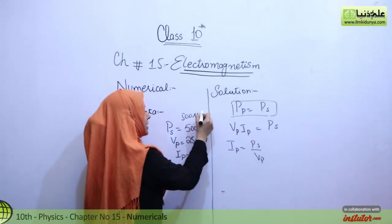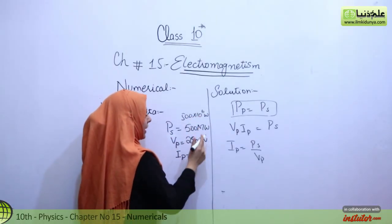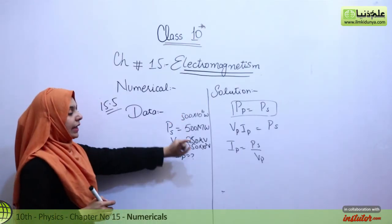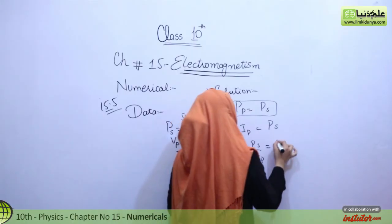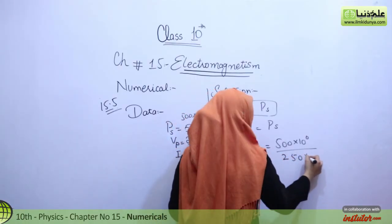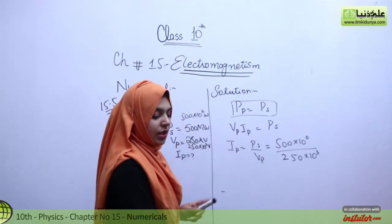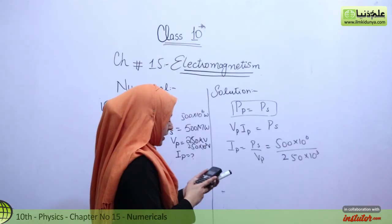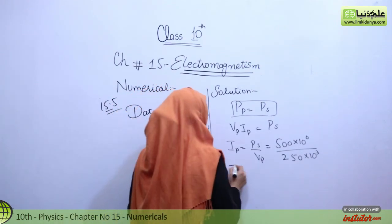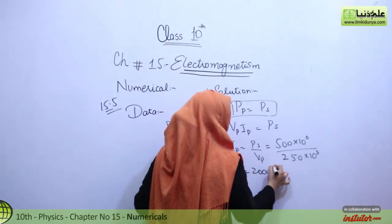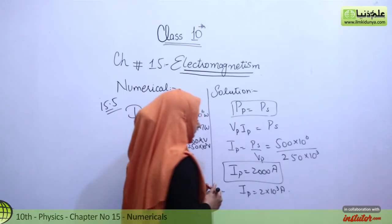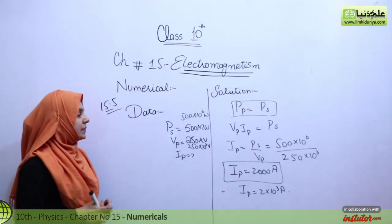The values are in mega and kilo units. Converting: mega means 10 to the power 6, kilo means 10 to the power 3. So PS equals 500 × 10^6, and VP equals 250 × 10^3. Calculating: 500 × 10^6 divided by 250 × 10^3 equals 2,000 ampere, which can also be written as 2 × 10^3 ampere.